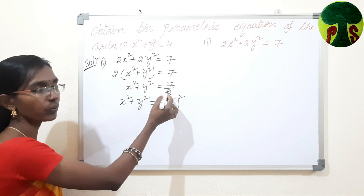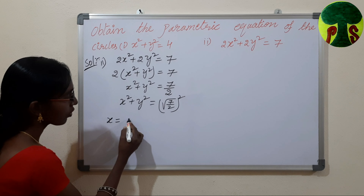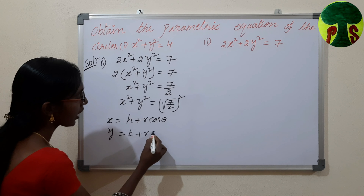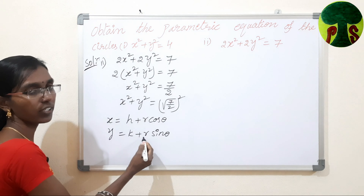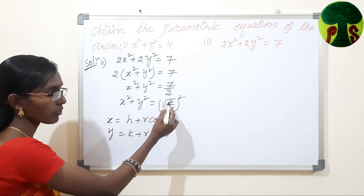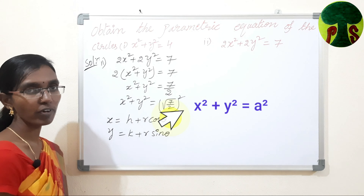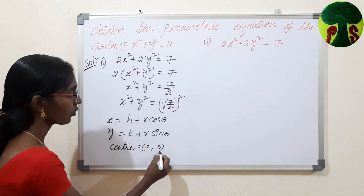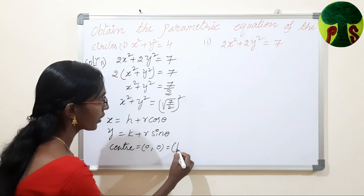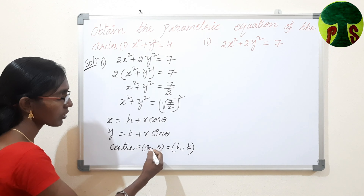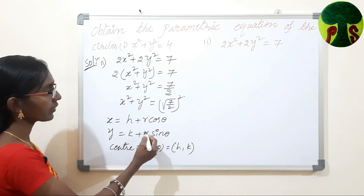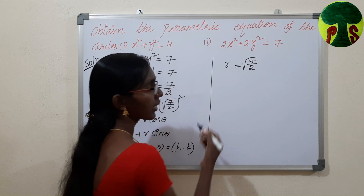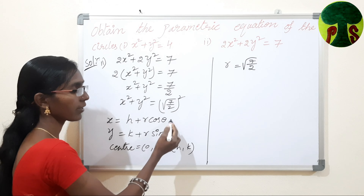The square root cancels and we get 7 by 2. The parametric equations of the circle are x equals h plus r cos theta and y equals k plus r sin theta. We need to find h, k, and r. Since x squared plus y squared equals (root(7/2))² is in the form x squared plus y squared equals a squared, the center is at the origin, so h equals 0 and k equals 0. The radius r equals root(7/2).